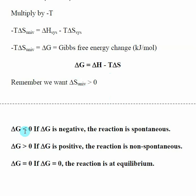if delta G is a negative number, then the reaction is spontaneous. If delta G is a positive number, the reaction is non-spontaneous. And if delta G is equal to zero, the reaction is at equilibrium.